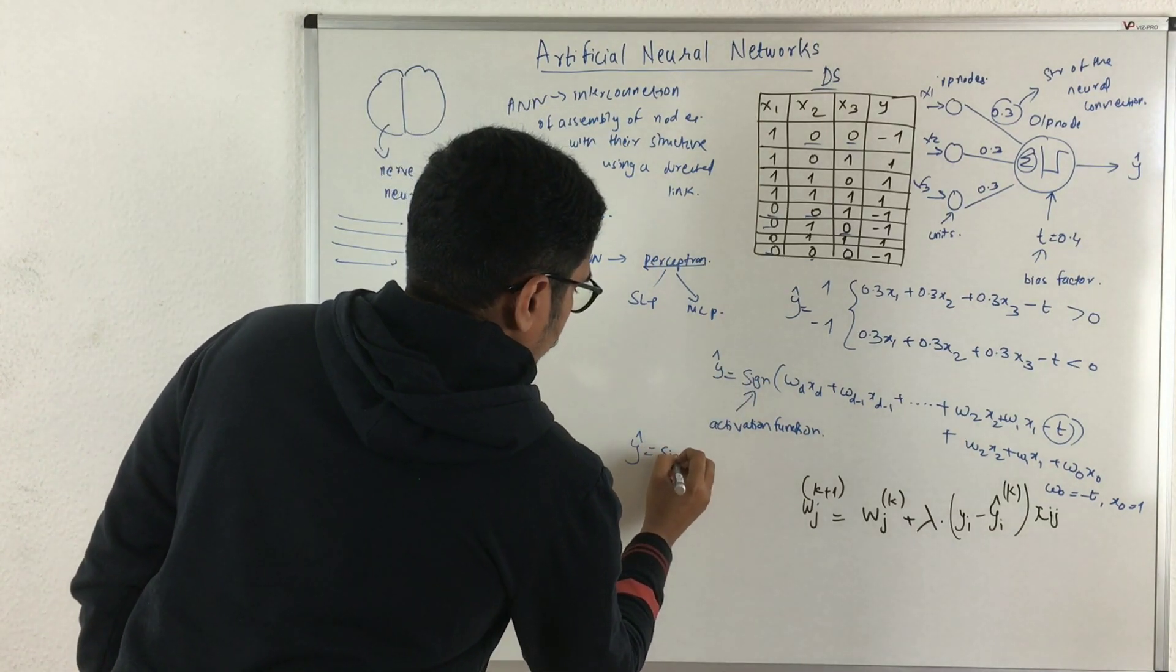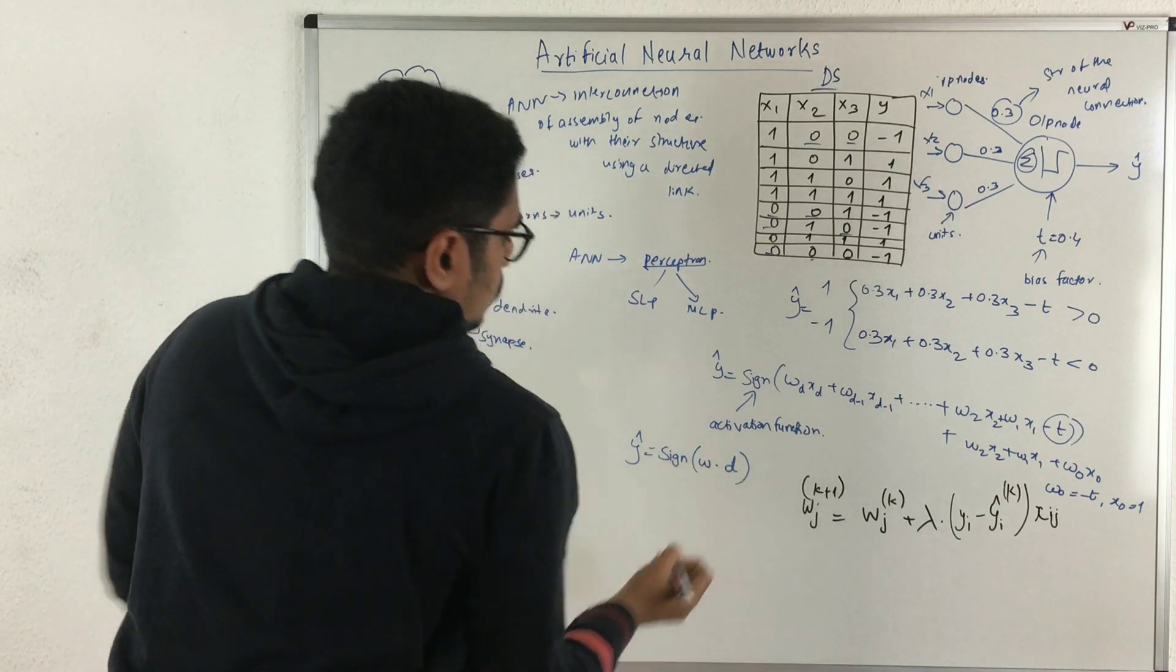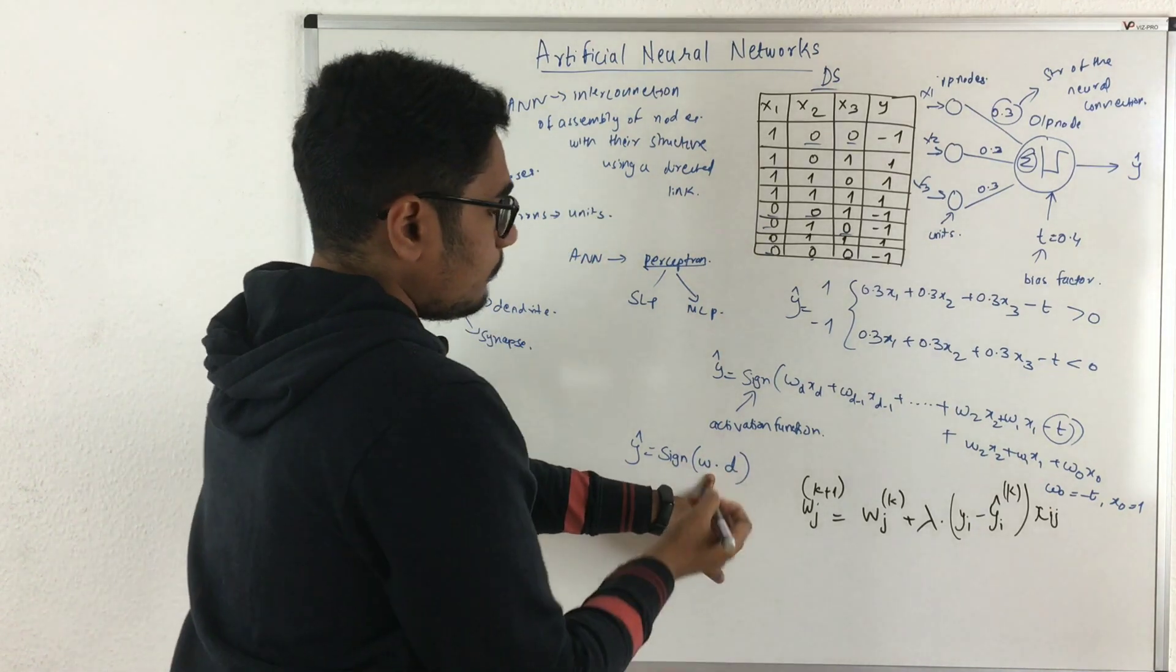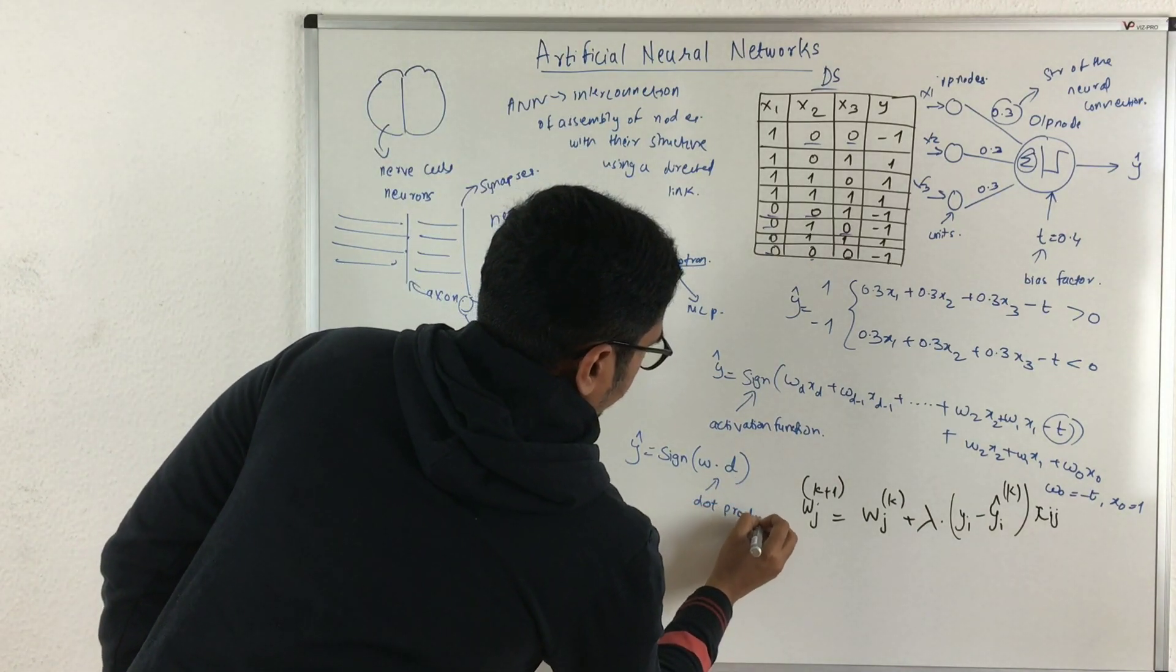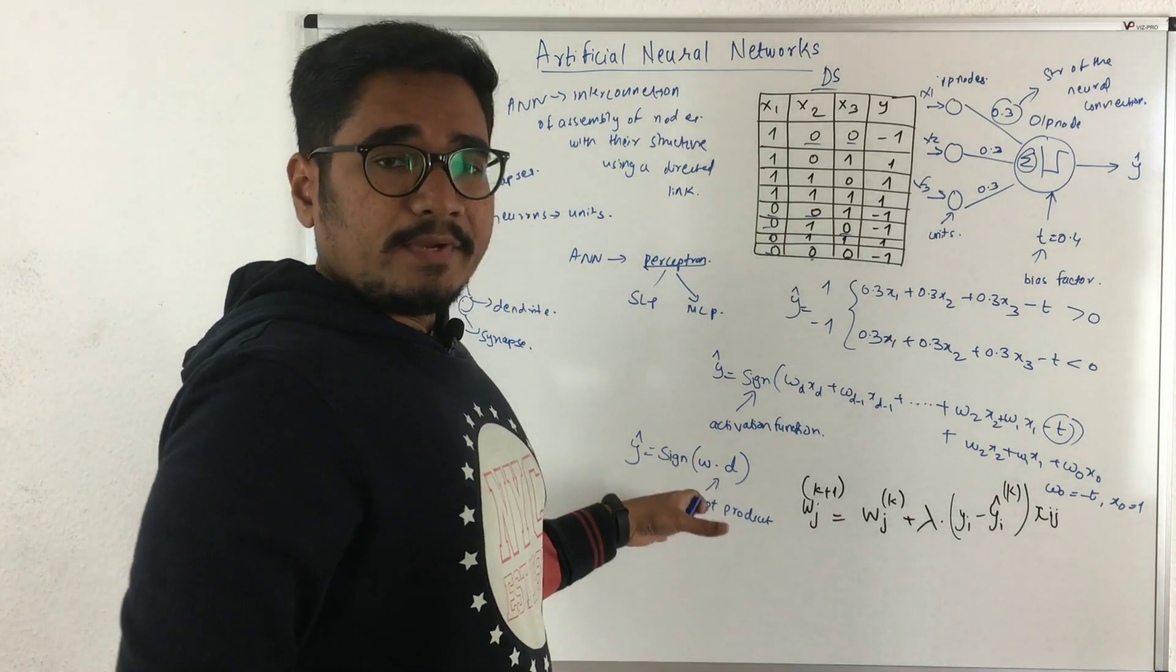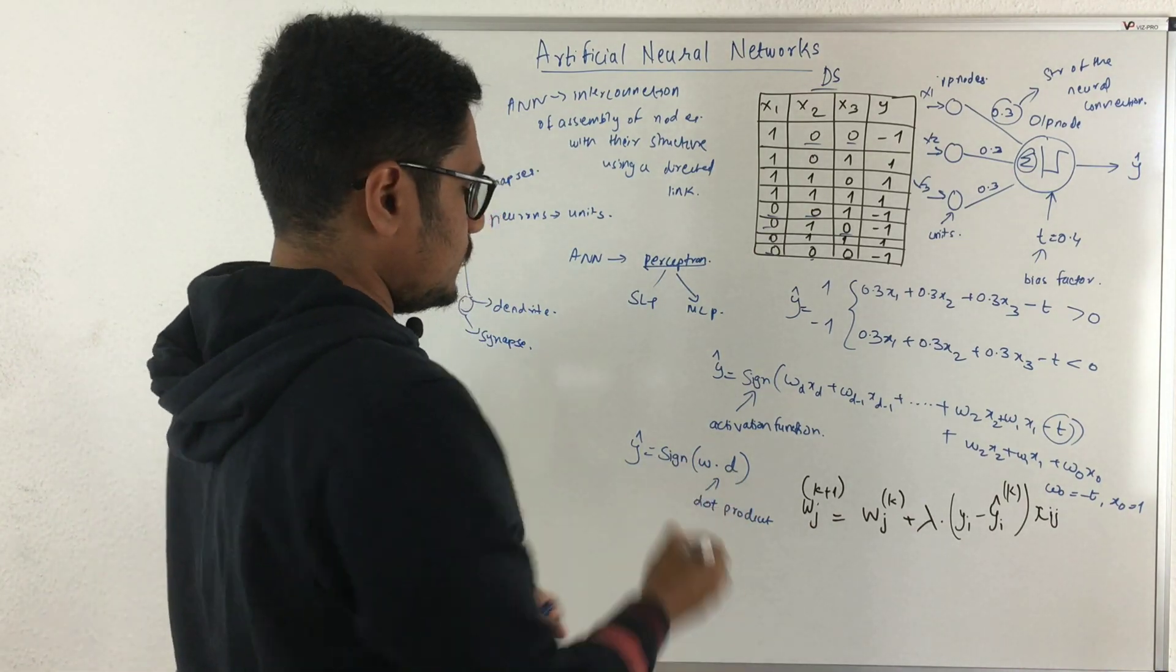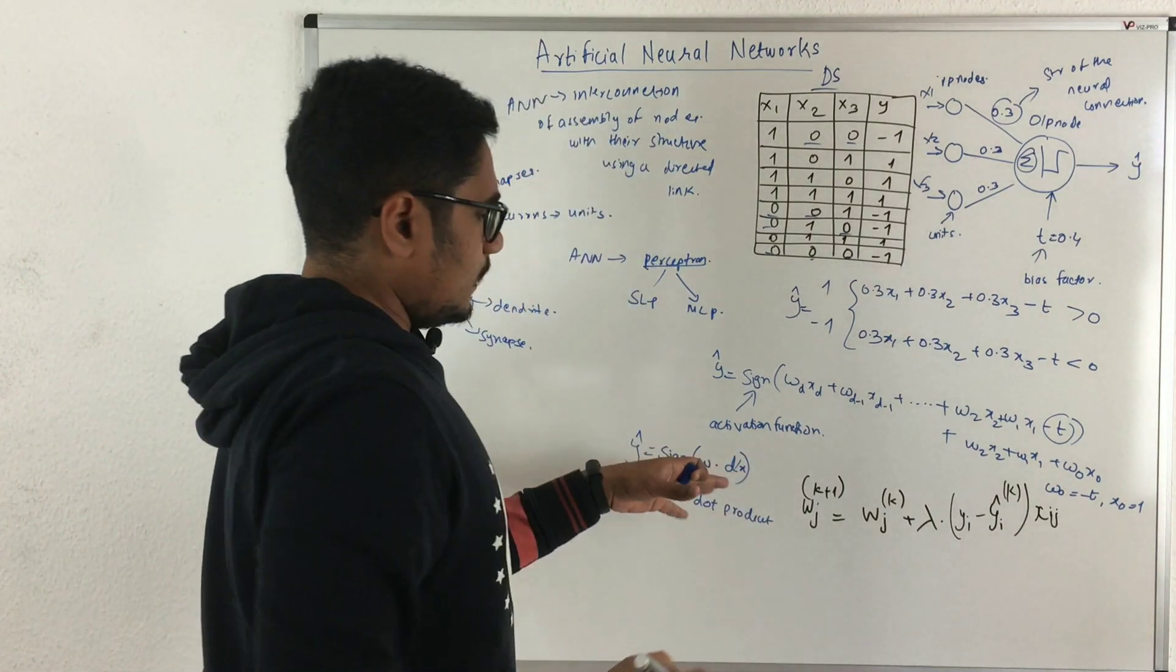A shorthand way of writing this is y cap equals sign of w dot x. This basically represents a dot product of weight vectors and your input vectors.